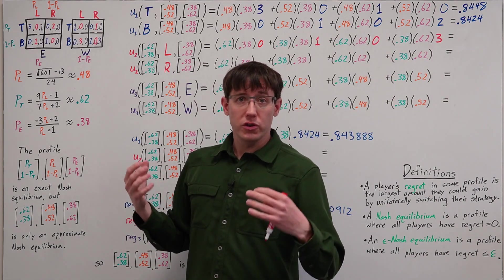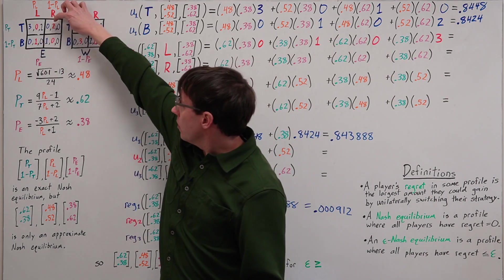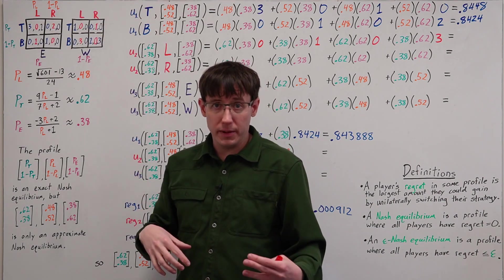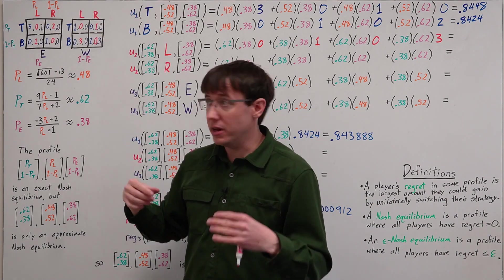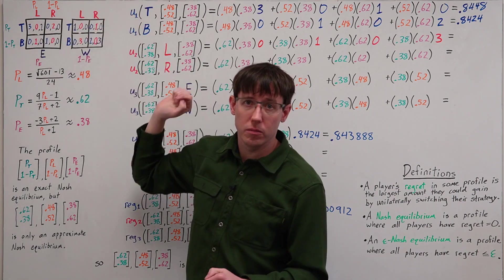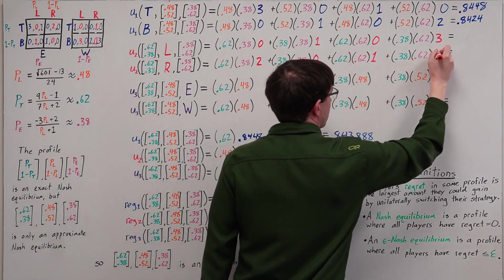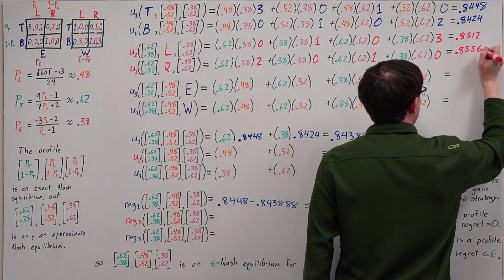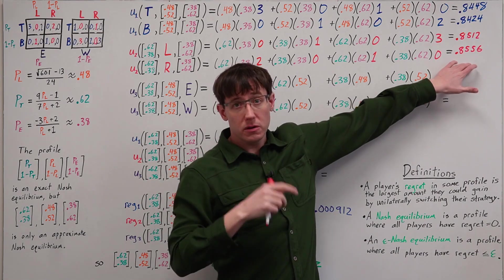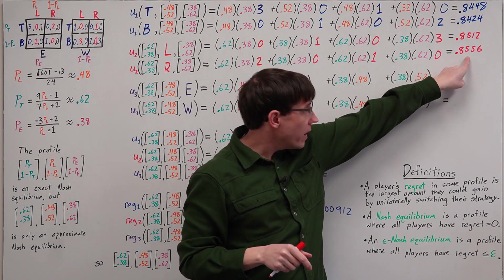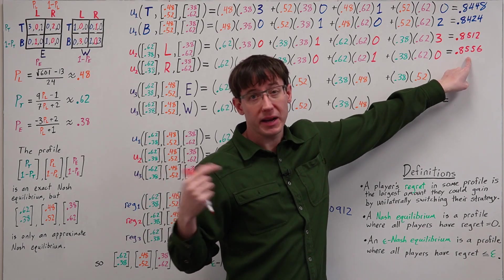And when player two chooses right, we'll get a distribution over these four outcomes with the same probabilities. And so we can fill in utilities for player two of 2, 0, 1, and 0. And when we add up all these terms, we again get similar utilities for both actions, but in this case, right gives a slightly higher expected utility.